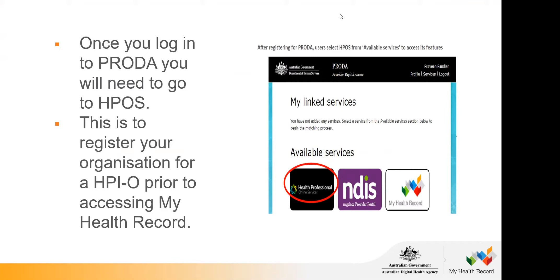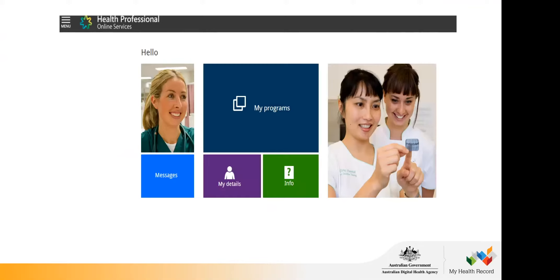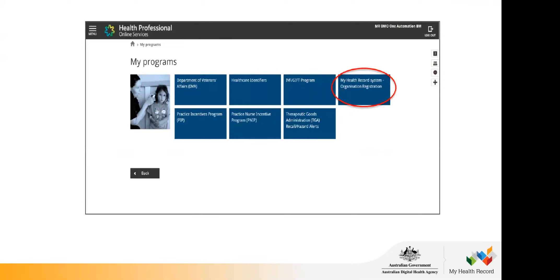If you have PRODA open and want to register your organisation, click onto the Health Professional Online Service — or HPOS — tile, which is circled in red on screen. That takes you to the HPOS services home page. From there, click onto the big blue My Programs box, and then find the tile that says My Health Record System Organisation Registration and click through.